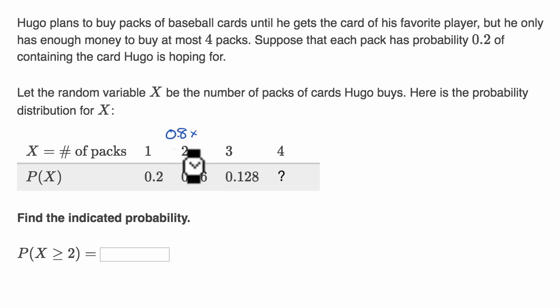But they're not asking us to calculate that. They give it to us. Then the probability that he gets three packs is 0.128, and then they've left blank the probability that he gets four packs. But this is the entire discrete probability distribution.